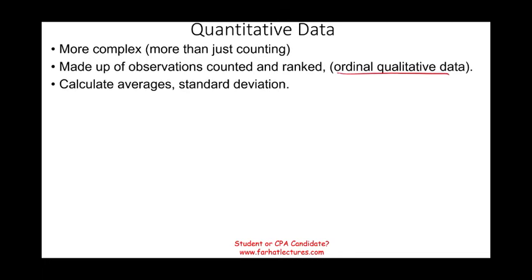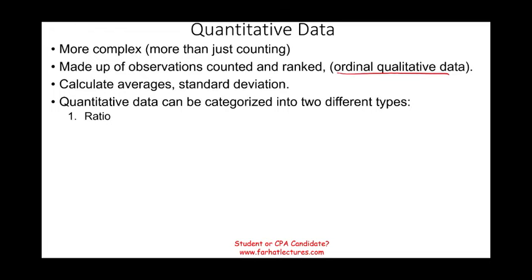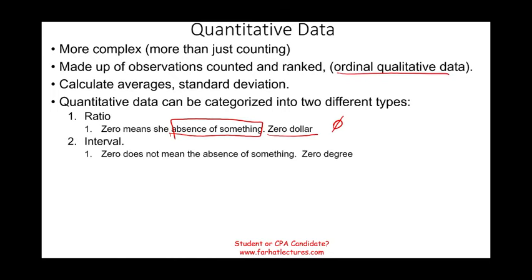Quantitative data. This data is more complex, it's more than just counting things. Usually it's made up of observations, counted and ranked. Just like ordinal qualitative data, you can rank them, you can count them, but here you can compute averages, standard deviation, any statistical number you would like to. They can be categorized into two different groups. One is called ratio, which have a zero that means zero in absence of something. So when we say zero dollars, it means you have no money. The other group is intervals. Here zero means something. For example, when you say zero Fahrenheit or zero Celsius as the temperature, it means something. It doesn't mean there's no temperature, it means it's freezing.